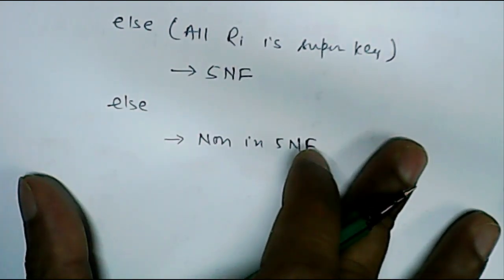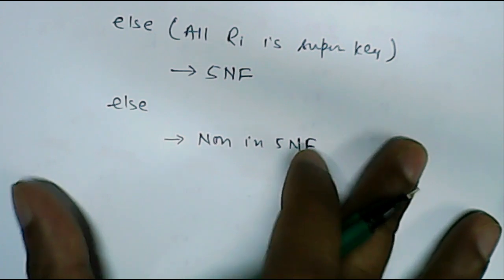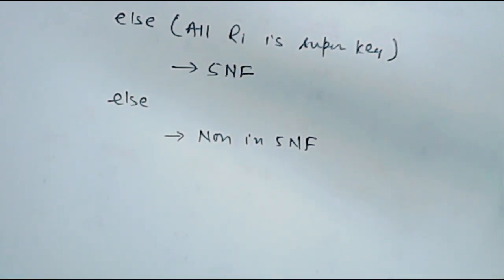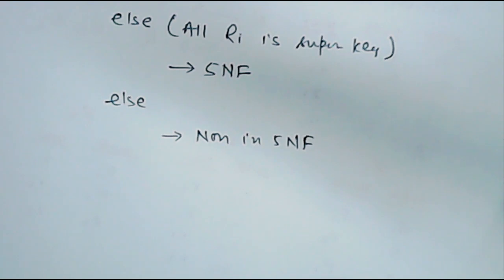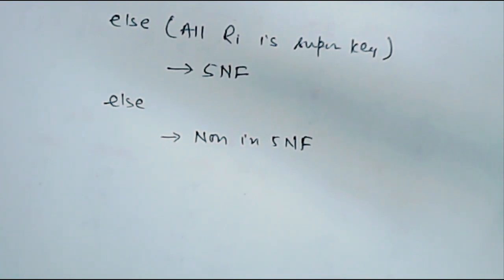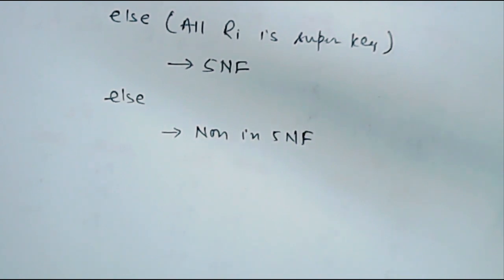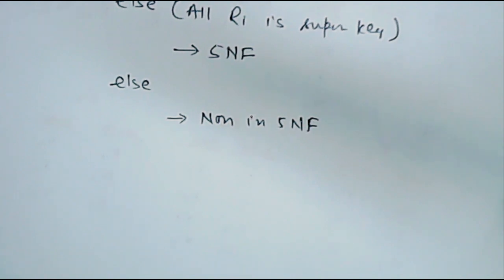So this is sort of an algorithm to detect whether a given relation is in fifth normal form or not. I hope you understand it. I will share an example which I have found on YouTube in which they have shown whether relations are in fifth normal form or not. If you don't understand, you can ask a question in the doubt section. Thanks for watching.